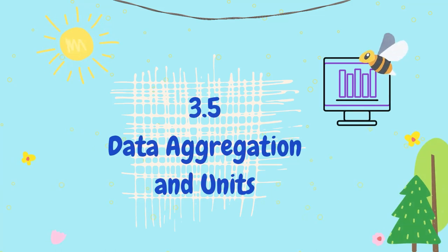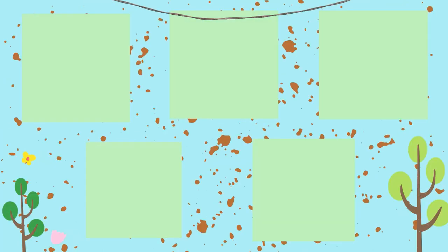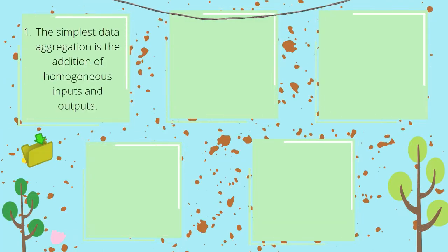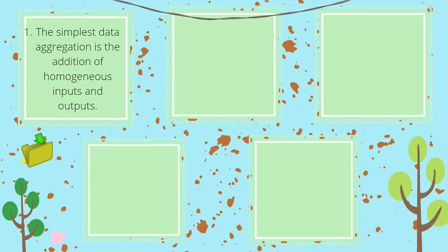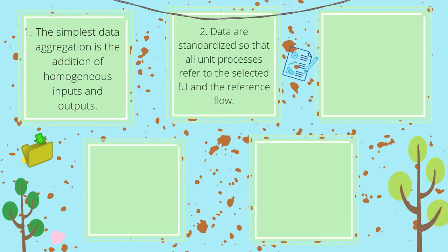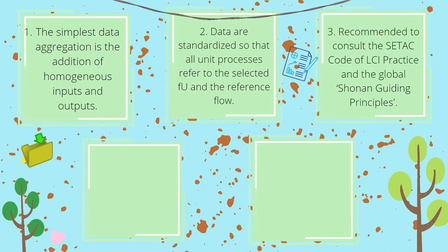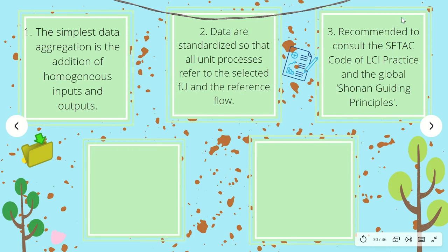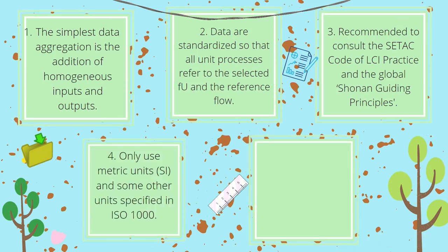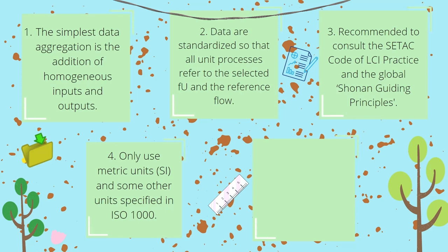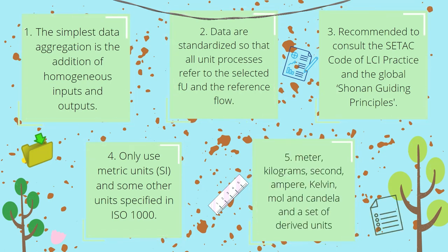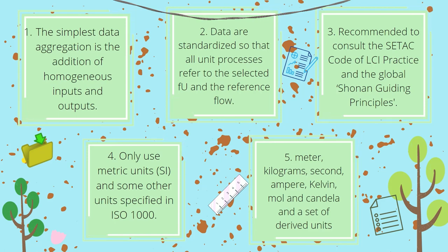The fifth subtopic is data aggregation and units. The simplest data aggregation is the addition of homogeneous inputs and outputs. The data are standardized so that all unit processes refer to the selected functional unit and the reference flow. It is also recommended to consult the code of LCI practice and the global Shonen guiding principles. Only metric units and units specified in ISO 10000 are used; the SI units include kilogram, Kelvin, second, and so on.